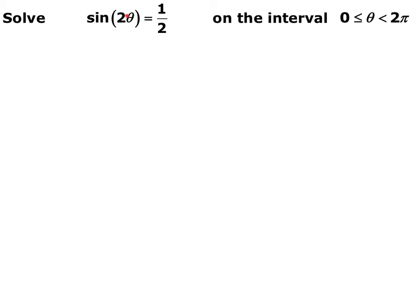Sometimes there's going to be more than just a theta inside the trig function. First, you want to isolate the trig function itself. In this case, sine of 2 theta is already isolated. The only difference is we want to expand our domain because we're looking at 2 theta, not just theta. Since we're looking at twice theta, I'm going to double our interval — instead of 0 to 2 pi, I'm going to go from 0 to 4 pi. Now we look at all angles between 0 and 4 pi where sine equals 1/2.